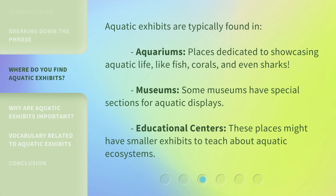Aquatic exhibits are typically found in aquariums — places dedicated to showcasing aquatic life, like fish, corals, and even sharks. Museums: some museums have special sections for aquatic displays. Educational centers: these places might have smaller exhibits to teach about aquatic ecosystems.